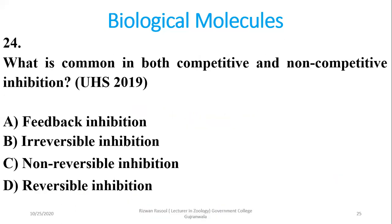Question 25: What is common in both competitive and non-competitive inhibition? According to Punjab Textbook Board, the answer is reversible inhibition, as irreversible inhibition is not discussed in the context of these two types. The right option is delta.